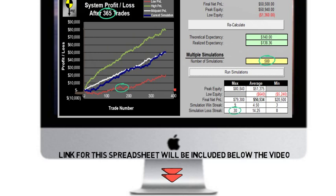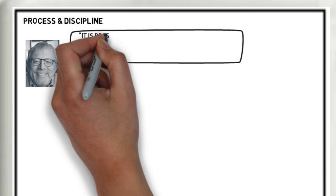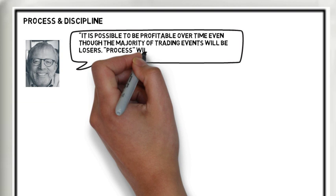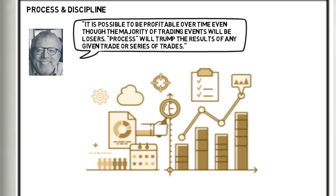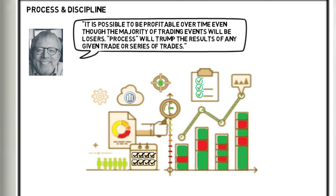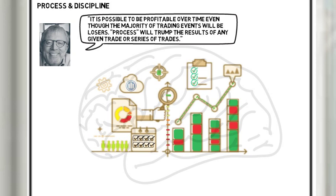Peter says it is possible to be profitable over time even though the majority of trading events could be losers. Process will trump the results of any given trade or series of trades. It's not easy psychologically to have 70% of your trades fail, but Peter is so focused on process. Discipline to follow the same process each time from selection and through the trade lifecycle is paramount. He knows that it's not the next trade or the next 20 trades, but the entire cycle that needs to play out. His emotions are not only steadied by years of experience but also by a true understanding of his own strategy.